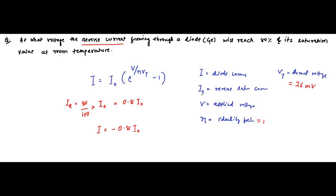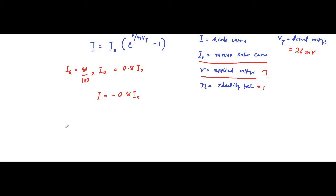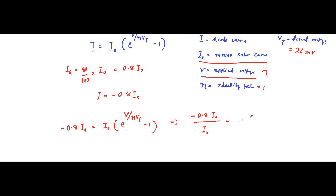80% of the reverse saturation current. It has been asked at what applied voltage the reverse current will be 80% of the saturation value. So that means: minus 0.8*I0 = I0 * (e^(V / eta*Vt) − 1). That implies 0.8*I0 / I0 = e^(V / eta*Vt) − 1.